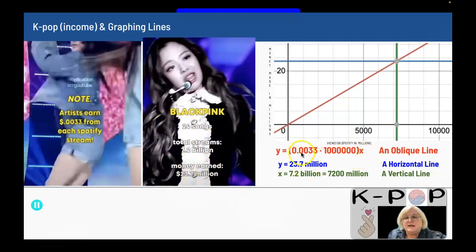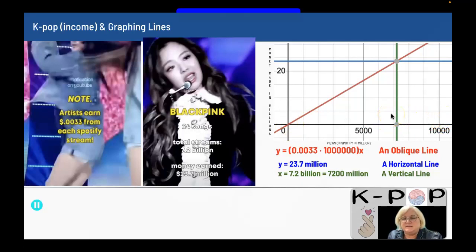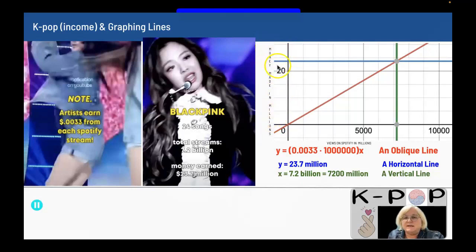I am graphing the line Y equals the rate they're paying per stream, and I have to multiply by a million because I can't start at 1 and go out to billions — it would be too big a graph to see anything. So I put the numbers going across in millions, and the numbers going up and down are also in millions: money made in millions compared to views on Spotify in millions.